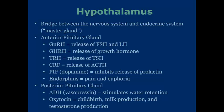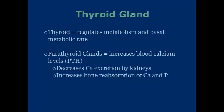ADH stimulates water retention in the kidneys. Oxytocin has been linked to childbirth, milk production, and testosterone production, but it's also been linked to affection — in general, oxytocin has effects that are still not widely well understood. The thyroid gland regulates metabolism and basal metabolic rate using thyroxin. The parathyroid gland increases blood calcium levels using PTH, which decreases calcium excretion by the kidneys and stimulates the bones to reabsorb calcium and phosphorus.